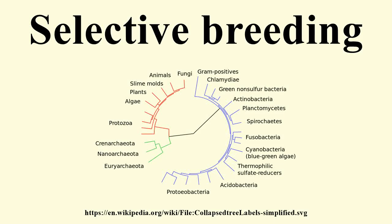Selective breeding is the process by which humans use animal breeding and plant breeding to selectively develop particular phenotypic traits by choosing which typically animal or plant males and females will sexually reproduce and have offspring together.